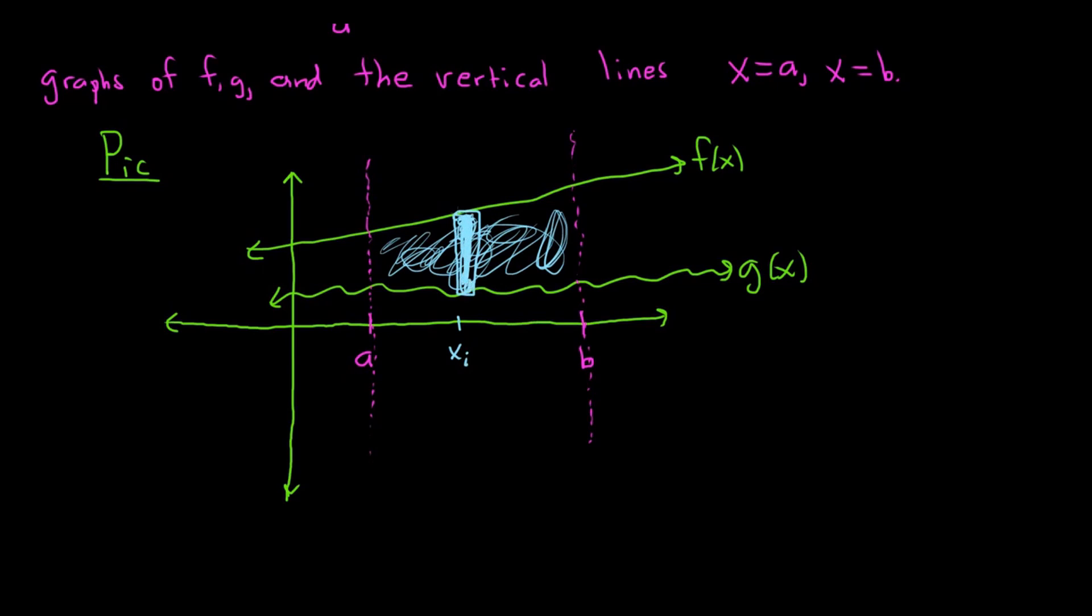And the height here would be f of xi. And the height here would be g of xi. So what we want to do is we want to find the length of the rectangle. We want to find this distance here.